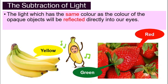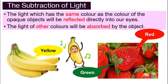Only the light with the same color will be reflected — that's how we see colors. Now, what is an opaque object? When we talk about the properties of light, the opaque object is the object that will not allow light to pass through it — they are not transparent. The light of other colors will all be absorbed by the object; only the light of the same color as the object will be reflected.